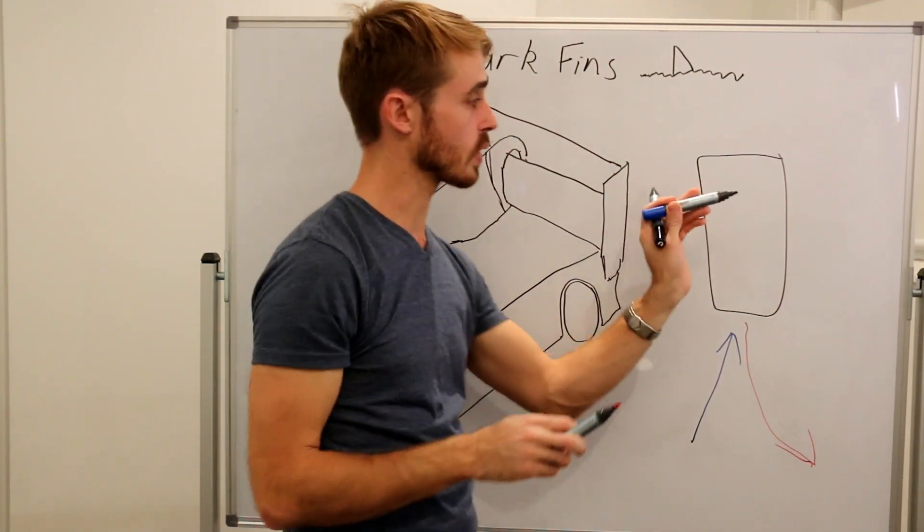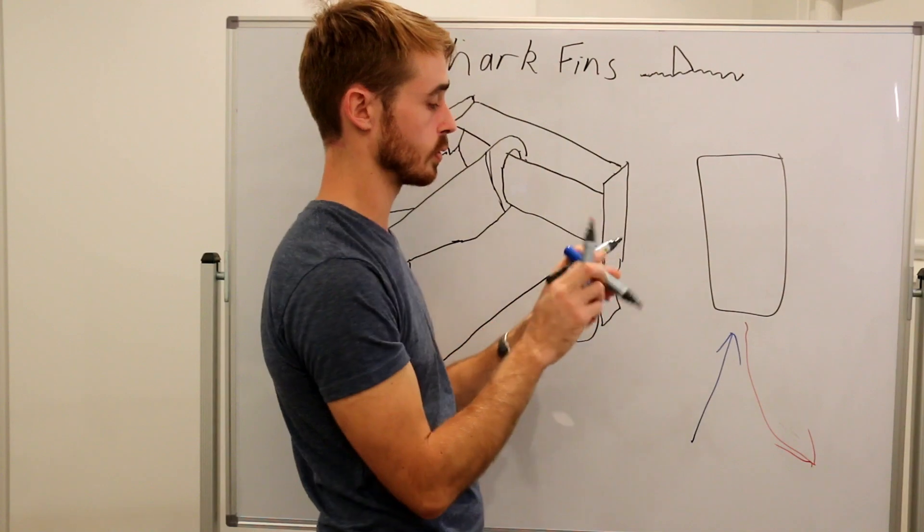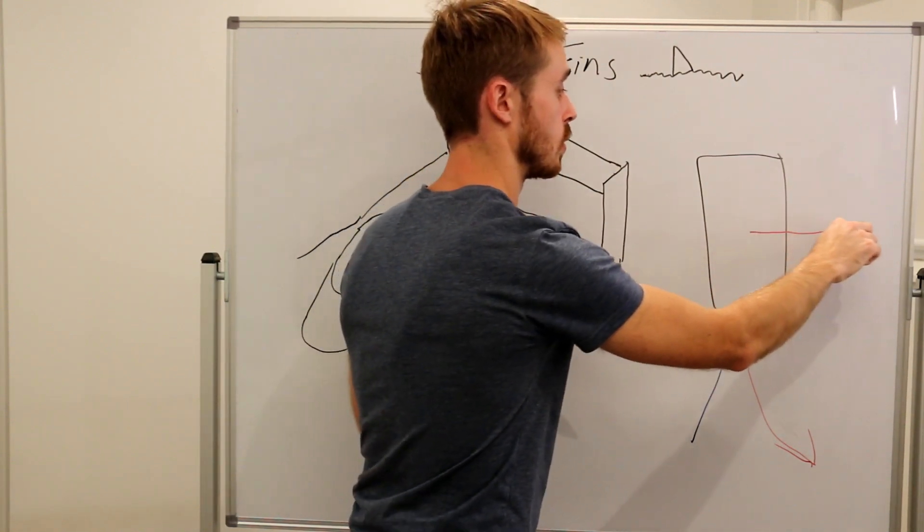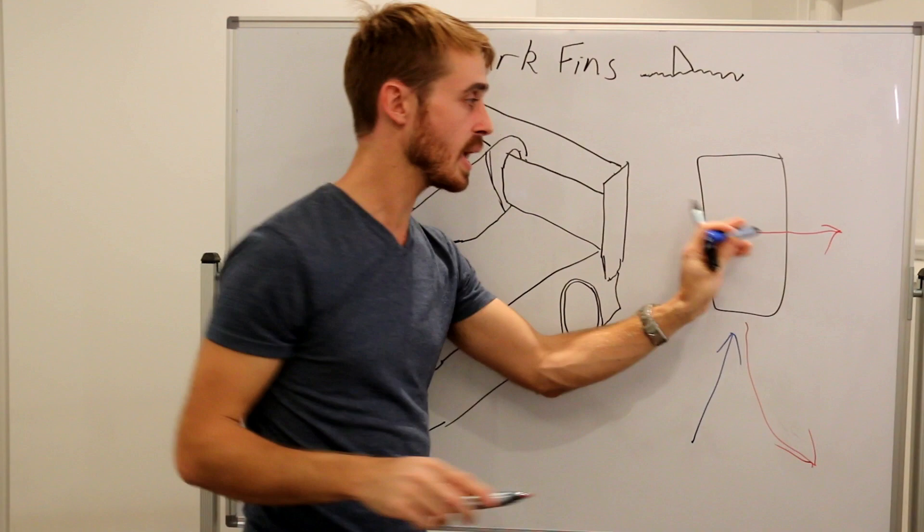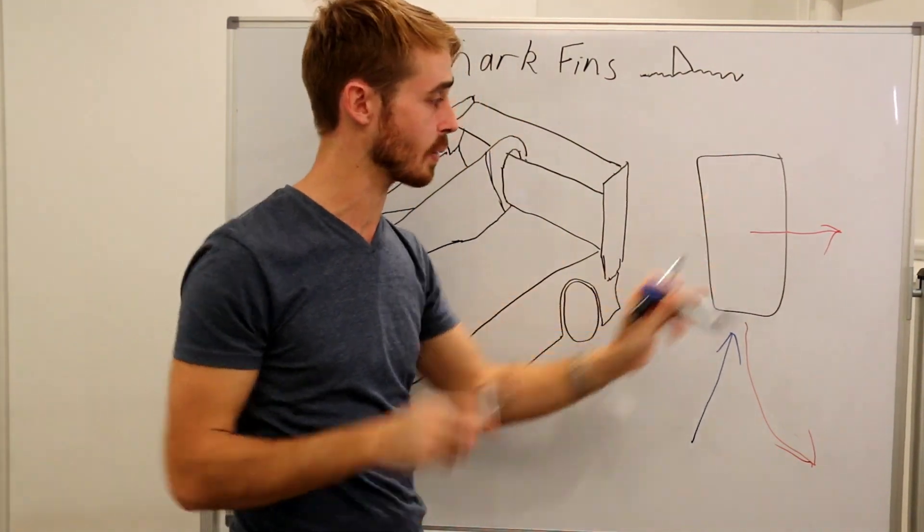When we're in a corner, we're trying to get grip force that way to pull us through the corner. So our grip force, we want that way. So any force we can get additionally that way is good.